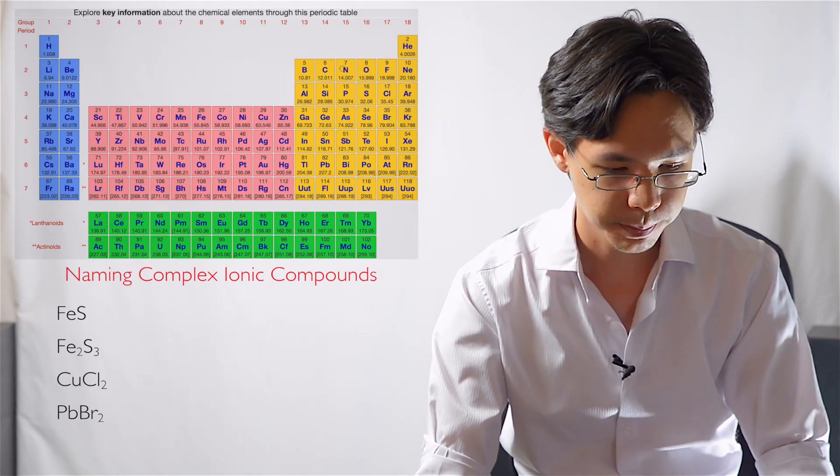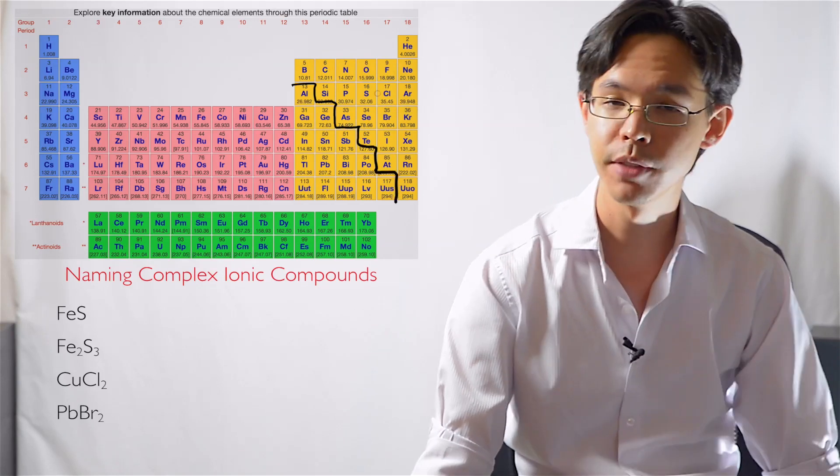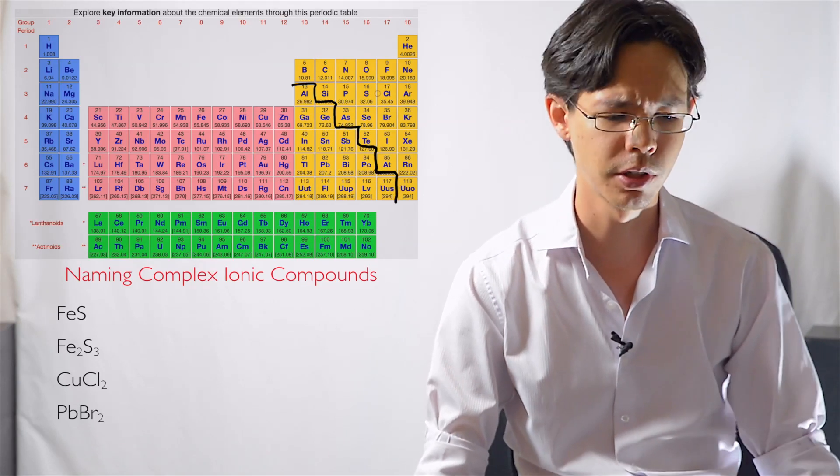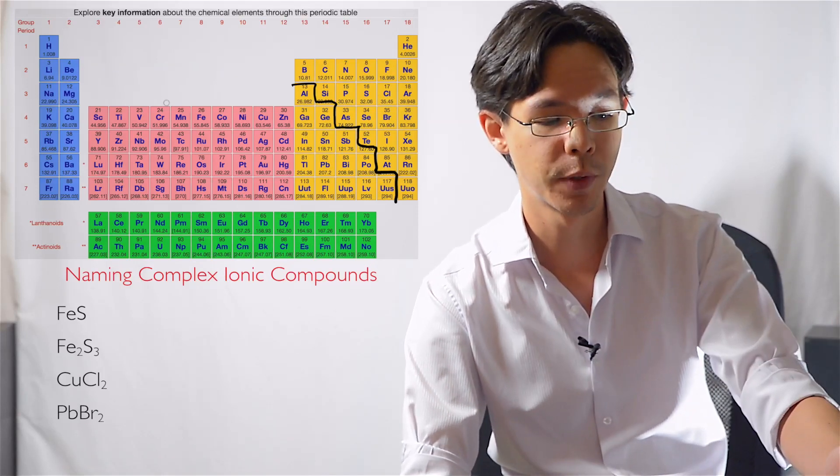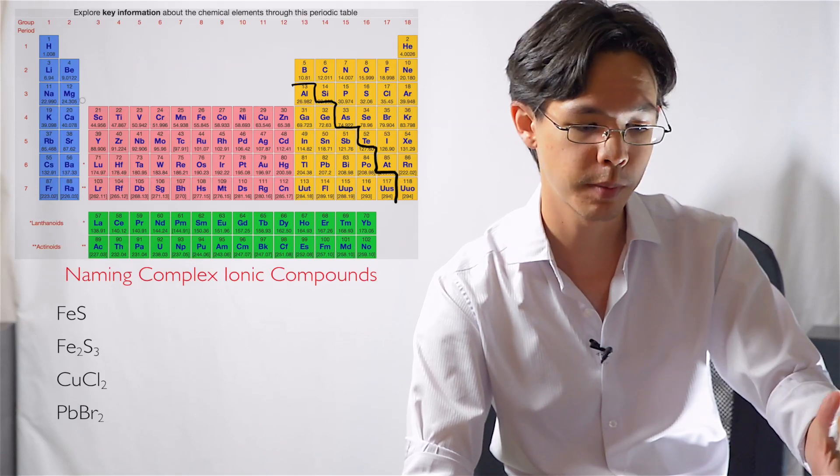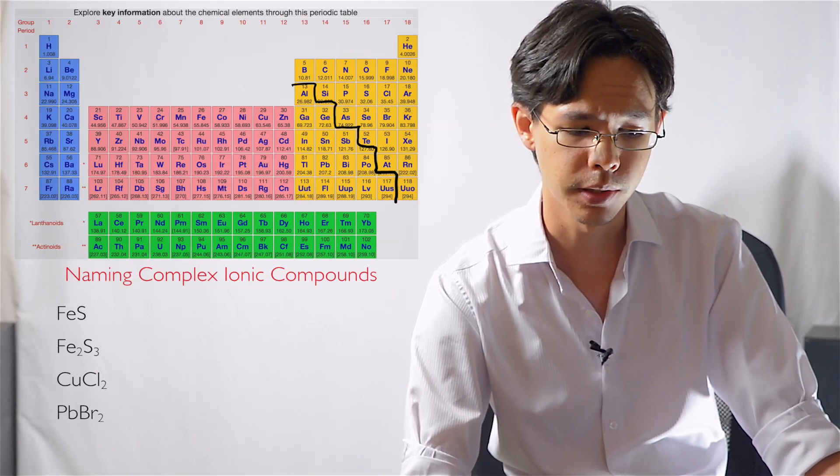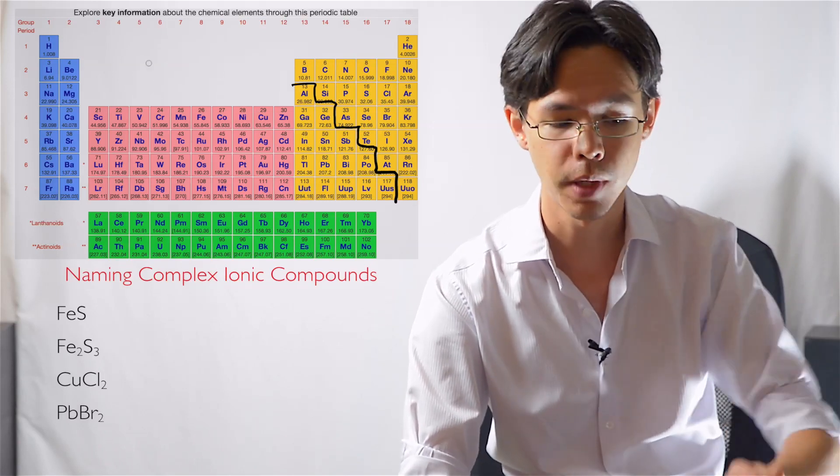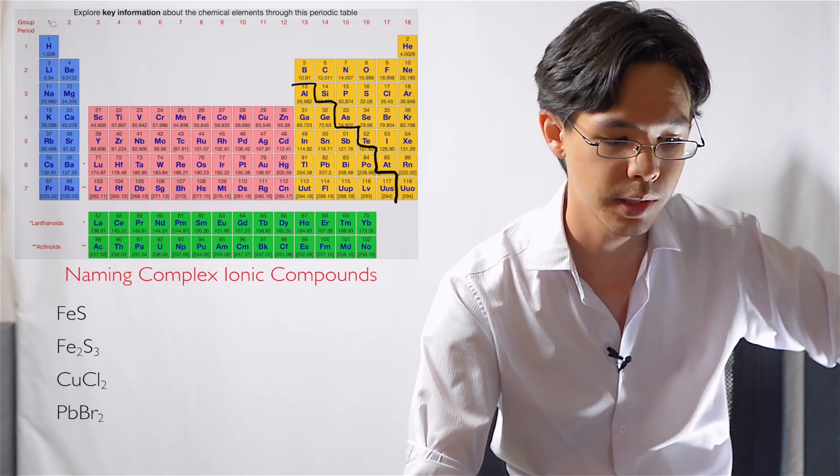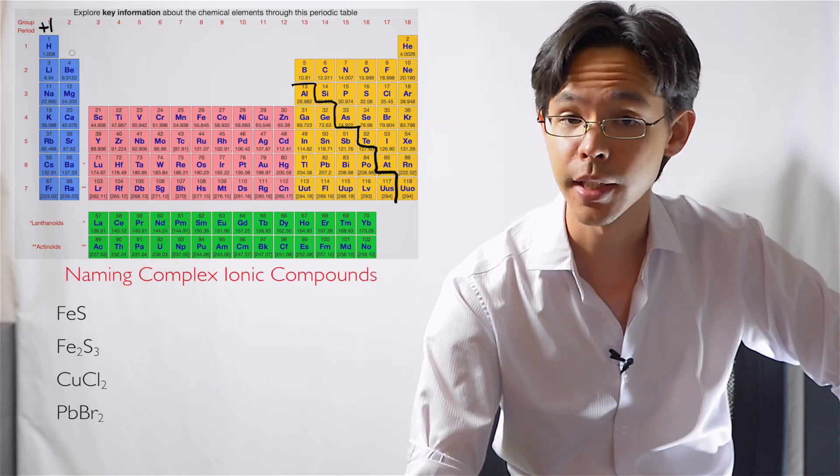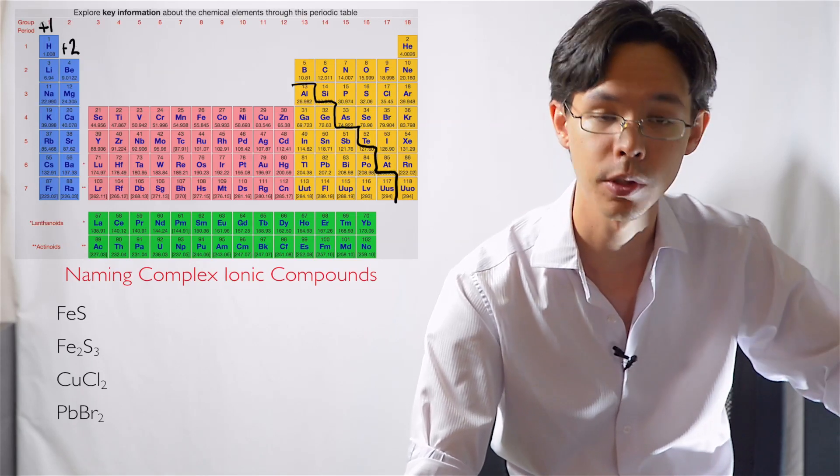You might remember from previous chemistry classes that when you read a periodic table, if you want to determine what kind of charge any particular atom will turn into when it becomes an ion, you just look it up by the group number. So group number one, when they become ions they become a positive one charge. The second group becomes a positive two charge.